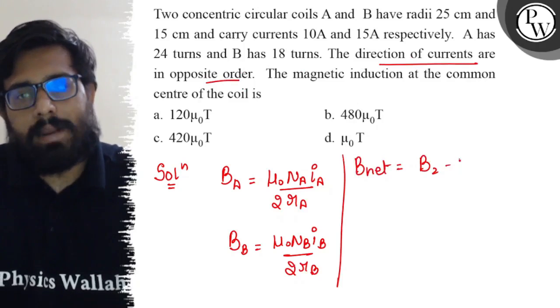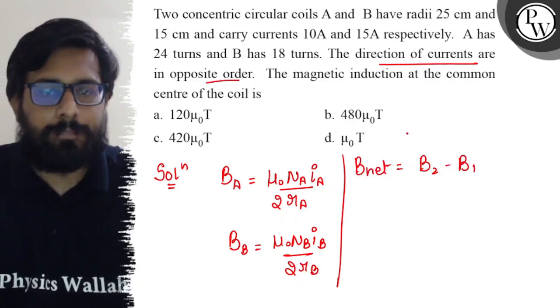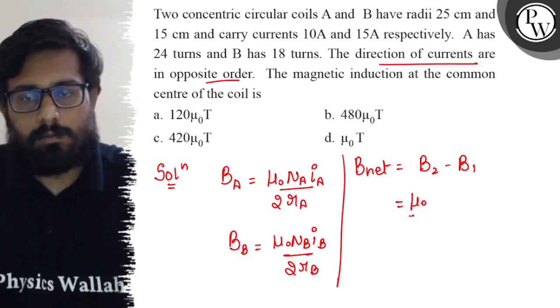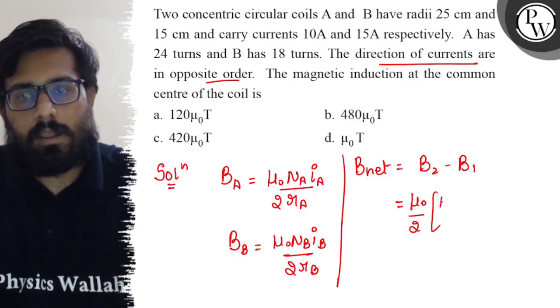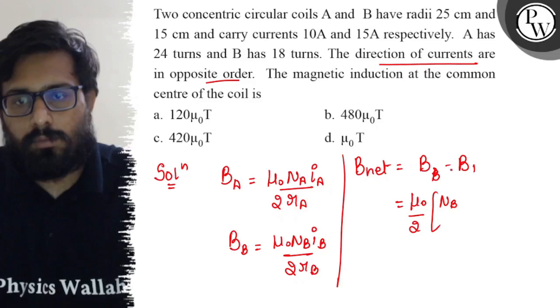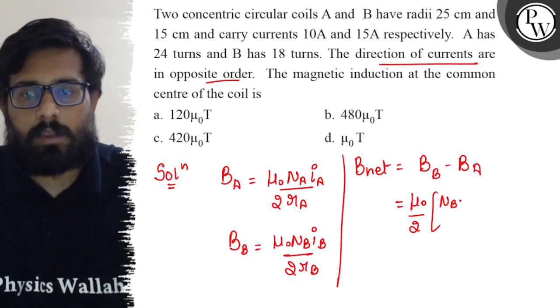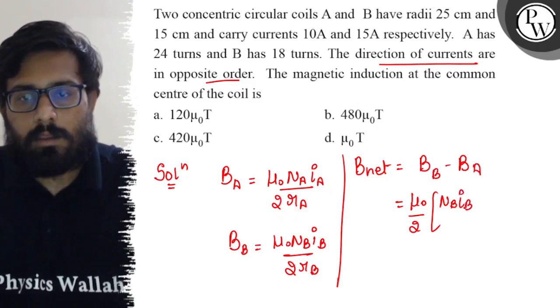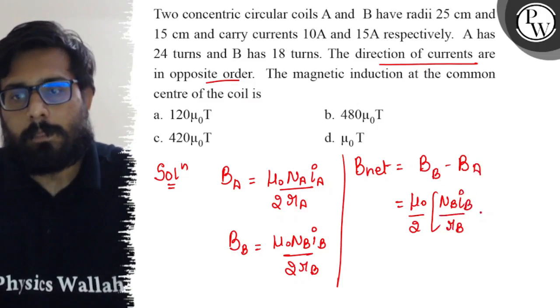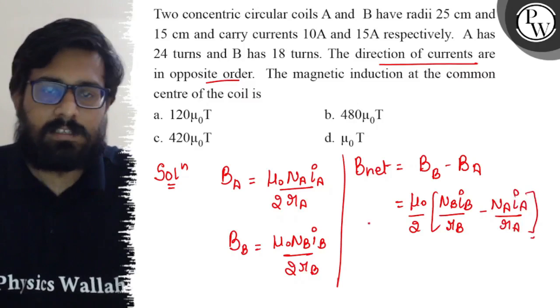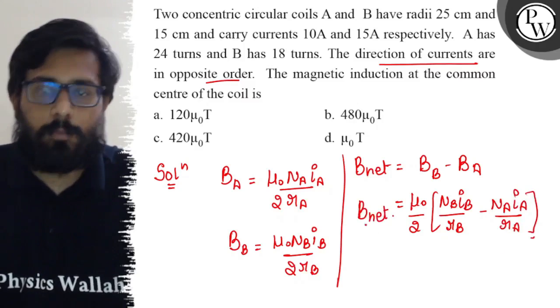And since the direction of the current is opposite, the B_net can be written as B_2 minus B_1. So what is common here, which I'm taking out: mu naught by 2 is common. You have n_B i_B upon r_B minus n_A i_A upon r_A. We have this relation.